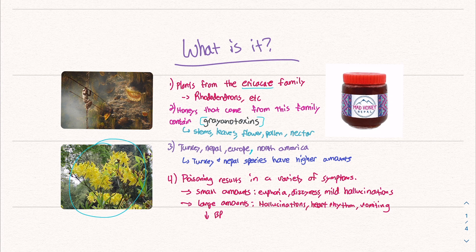You can find these plants and this honey in places like Turkey, Nepal, Europe, North America. Turkey and Nepal seem to have the higher amounts of these plants and thus the most honey from what I understand. Nepal seems to be the place where it's more popularized, but it is present in other parts of the world.